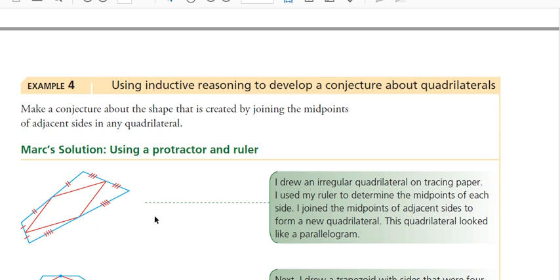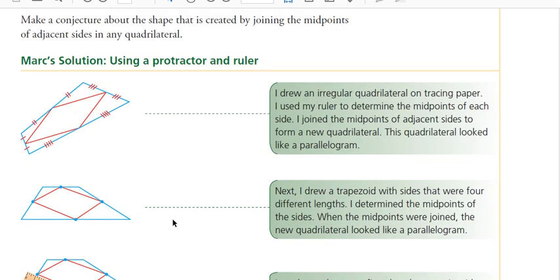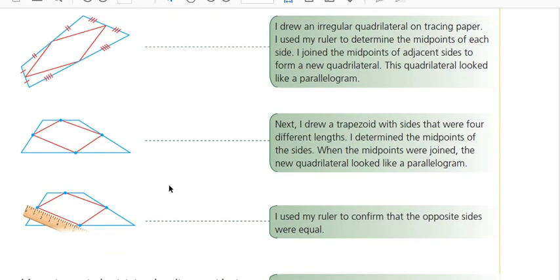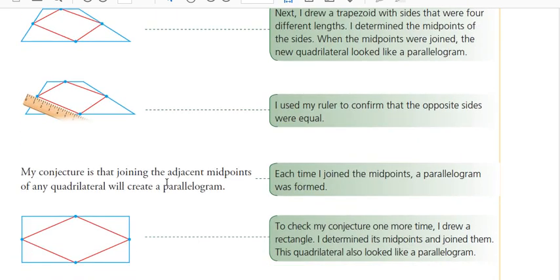So what you're going to have to do is you might have to do this several times, three, four, five times before a pattern emerges, right? And so there are going to be questions where you're going to have to take different examples and do it. So here's another one. And they've joined what would be the midpoints and so on. And so in the process of this equation, what this person has come up with is that each time he or she joined the midpoints, a parallelogram was formed.